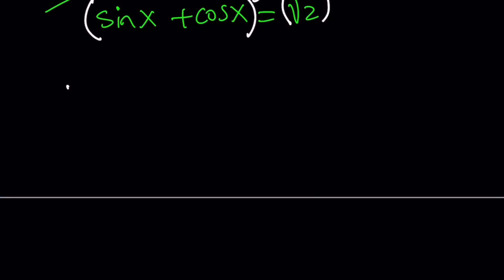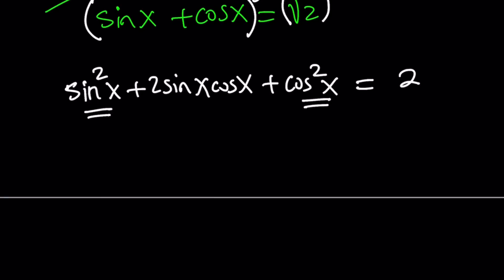When we square both sides we get sine squared x plus 2 sine x cosine x plus cosine squared x equals 2. Now remember one of the most important identities, maybe the most important identity, is sine squared plus cosine squared equals 1. So this is 1 plus, and what does that look like? If you study double angles in trigonometry this is sine of 2x and this is equal to 2.